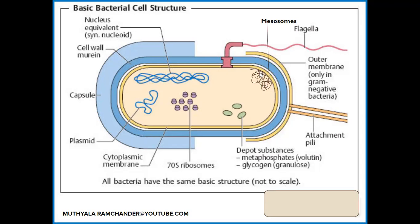Below the cytoplasmic membrane, a naked nucleoid is present. It is equivalent to a nucleus but is not covered with an envelope — this nucleus structure belongs to prokaryotic cells. It is made with DNA. The DNA acts as the equivalent of a nucleus and controls the total cell activities; all activities of the cell are under the control of the nucleoid made with DNA.